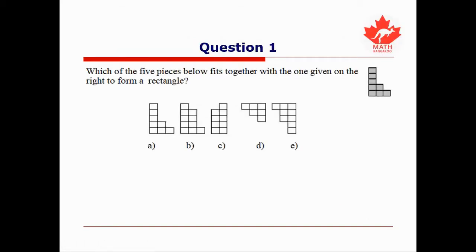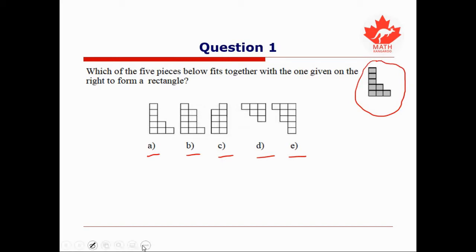For our first question, we're told that the five pieces below — A, B, C, D, or E — one of them can be combined with this darkened shape on the right to form a rectangle.